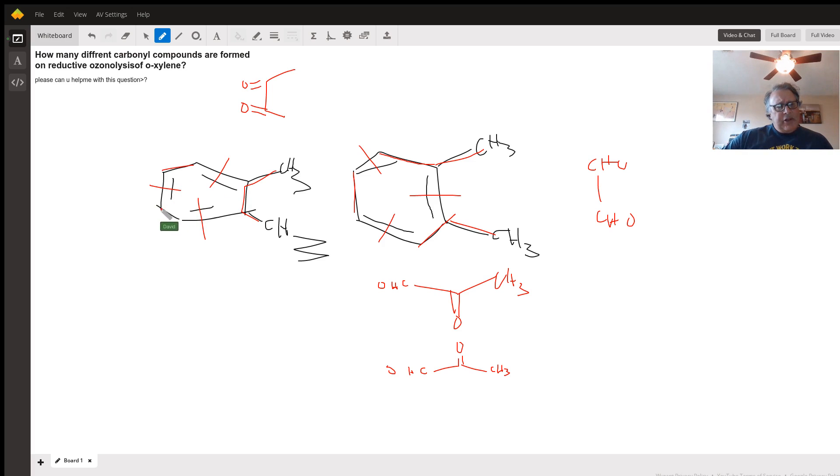Here and here, which again, is going to look like CHO, CHO. From this piece, from this piece, we'll have the identical molecule, CHO, CHO.